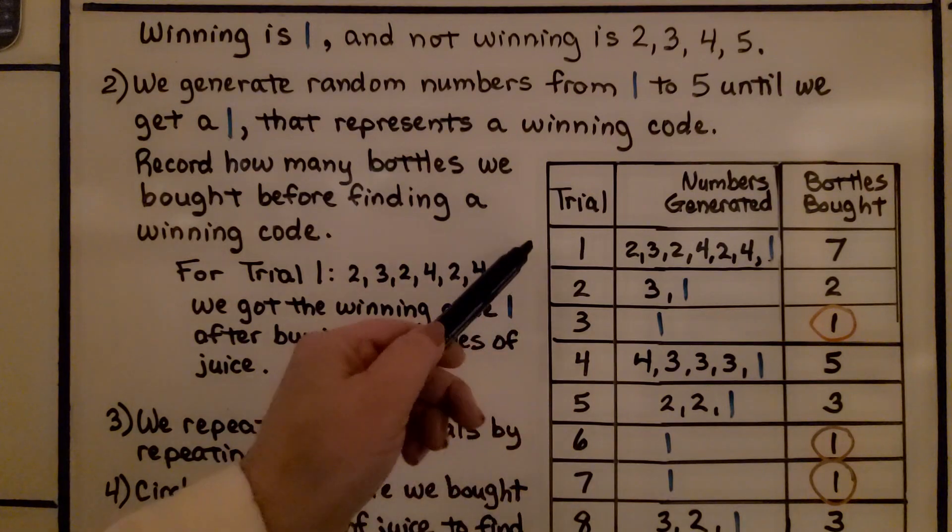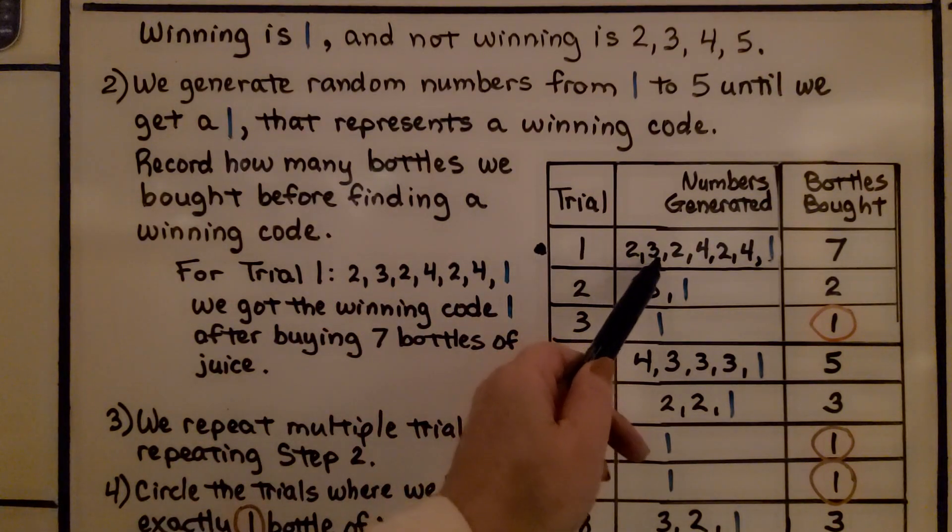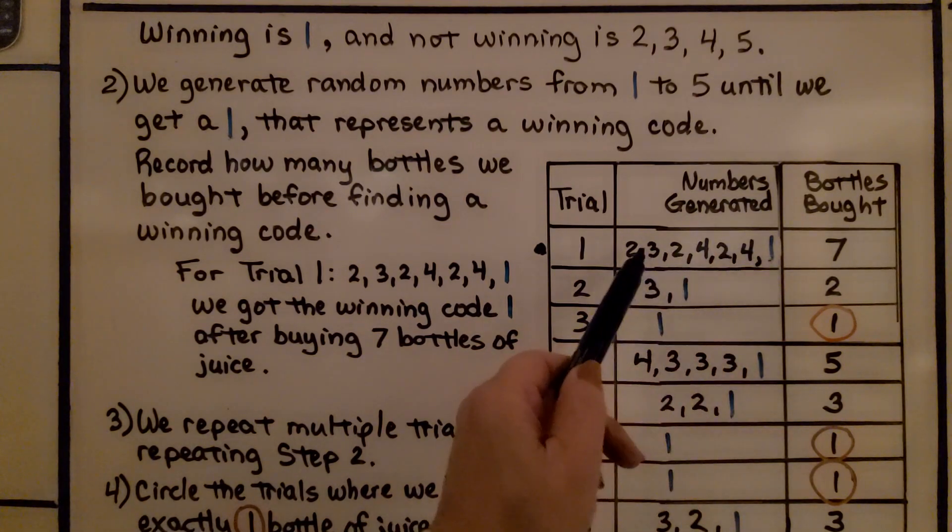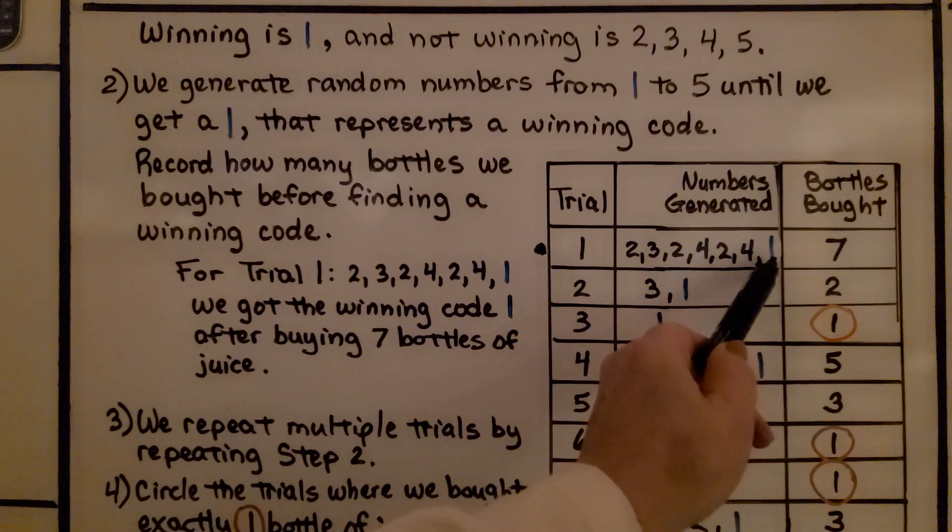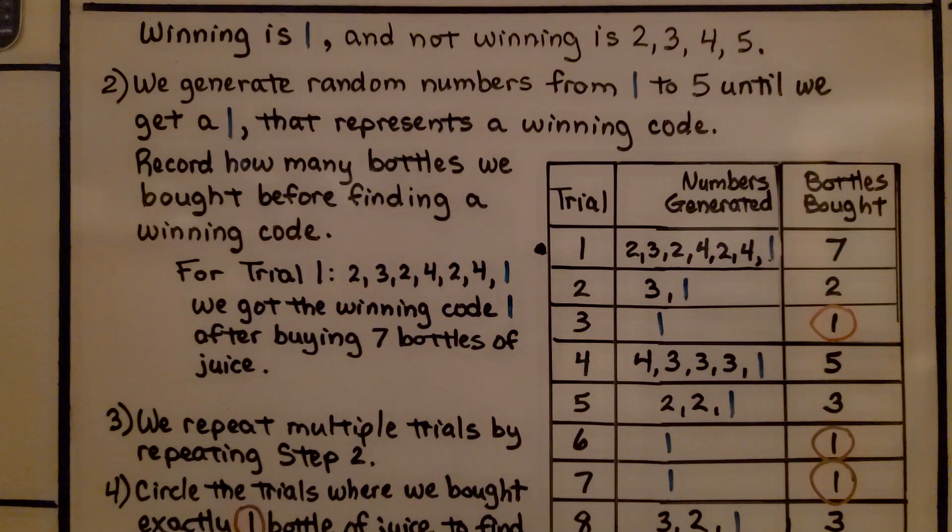So for trial 1 here, I got a 2, 3, 2, 4, 2, 4, and I finally got a 1 that represents 1, 2, 3, 4, 5, 6, 7 numbers generated before I got a 1. So that's 7 bottles bought. That means we got the winning code 1 after buying 7 bottles of juice.